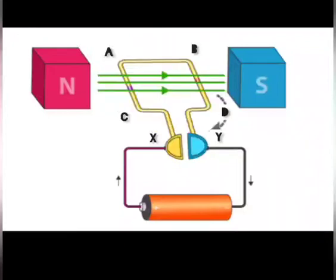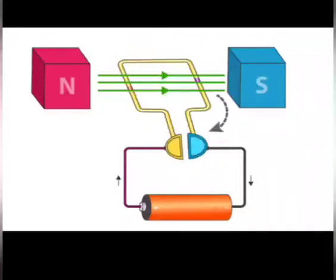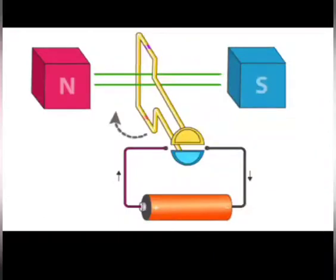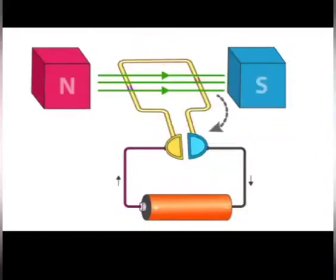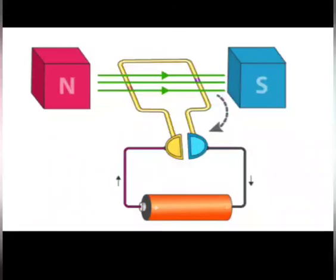In arm CD it flows from C to D, that is opposite to the direction of current through arm AB. On applying Fleming's left hand rule for the direction of force on a current carrying conductor in a magnetic field.